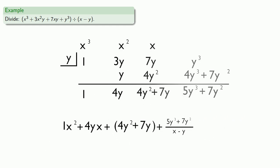And that gives us our quotient and remainder. And we can write this. Remember that these correspond to the coefficients of x squared, x, the constant, and the numerator of a rational expression whose denominator is x minus y.